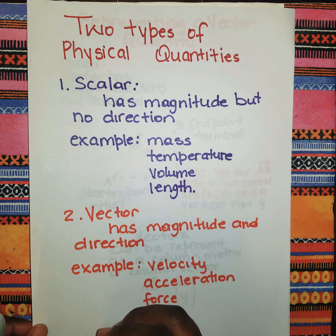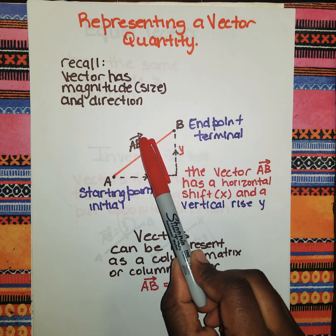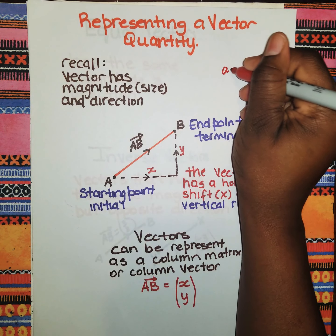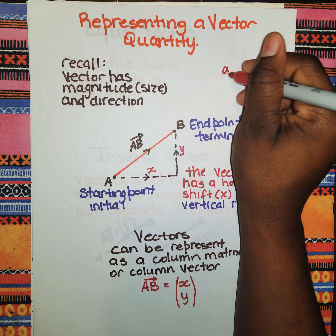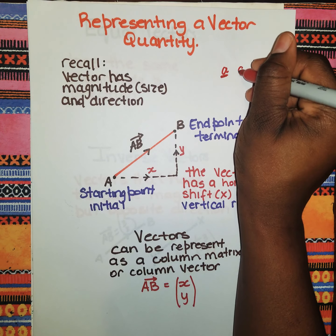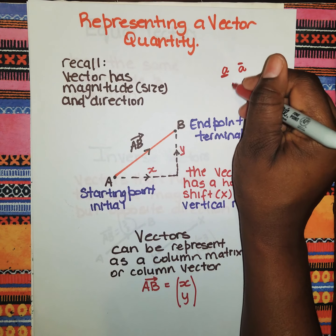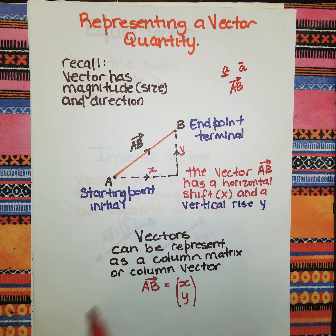Vectors can be represented using capital letters or lowercase letters. If you have capital letters, you will see an arrow above it. If it's a lowercase letter, you will see it in either bold italic, or bold with a little bar below it — and some people have the bar above it. These all represent a vector.